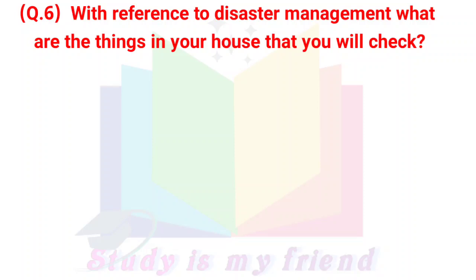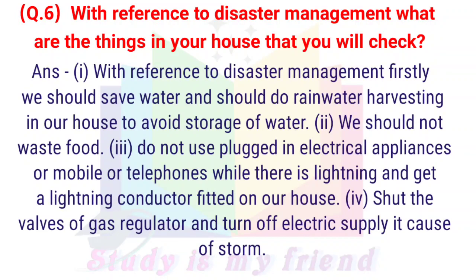Question 6: With reference to disaster management, what are the things in your house you should check? Answer: 1. We should save water and practice rainwater harvesting in our house to avoid water shortage. 2. We should not waste food. 3. Do not use plugged-in electrical appliances or mobile or telephone while there is lightning, and get a lightning conductor fitted on the house. 4. Turn off the valves of the gas regulator and electric supply during storms.